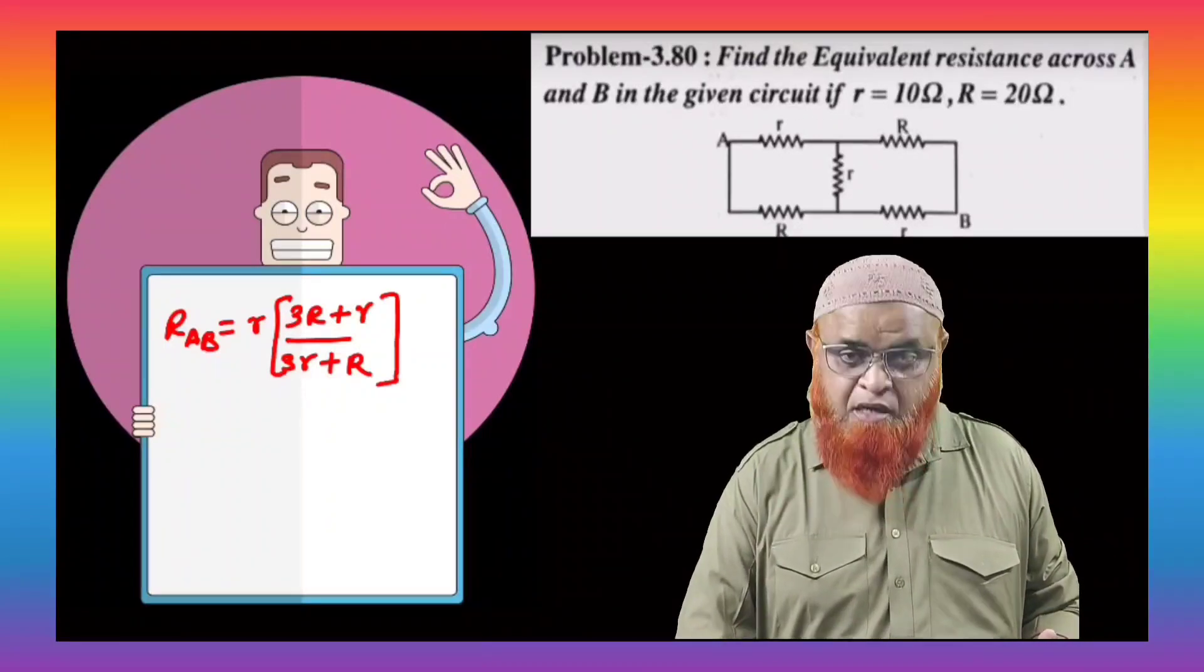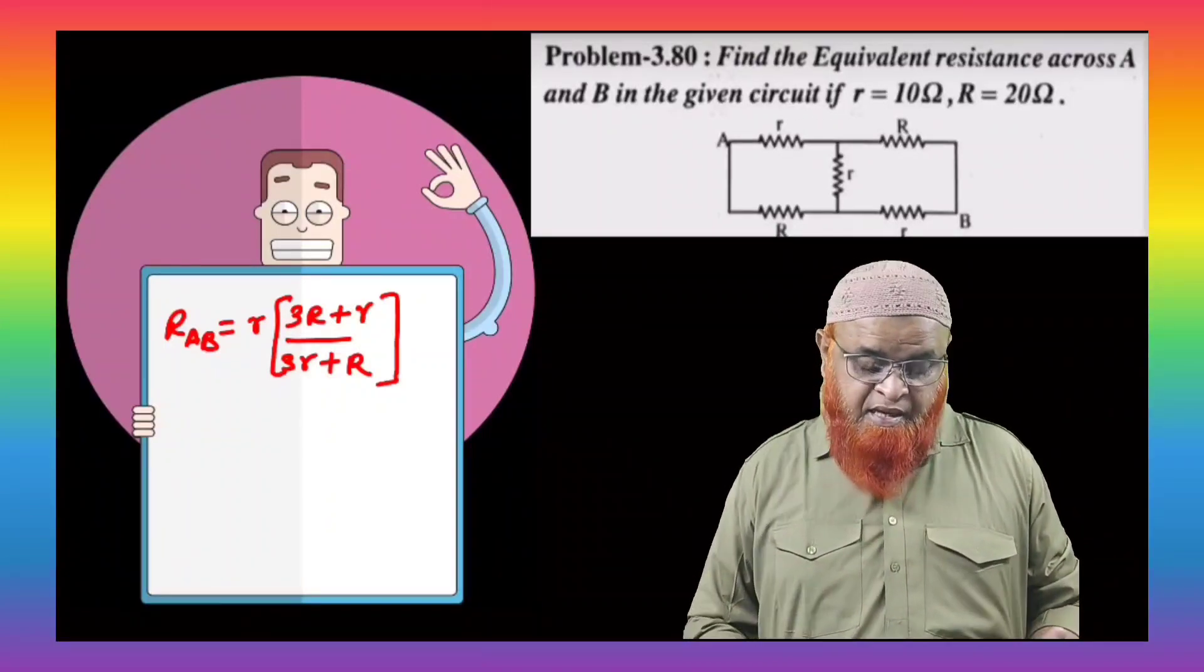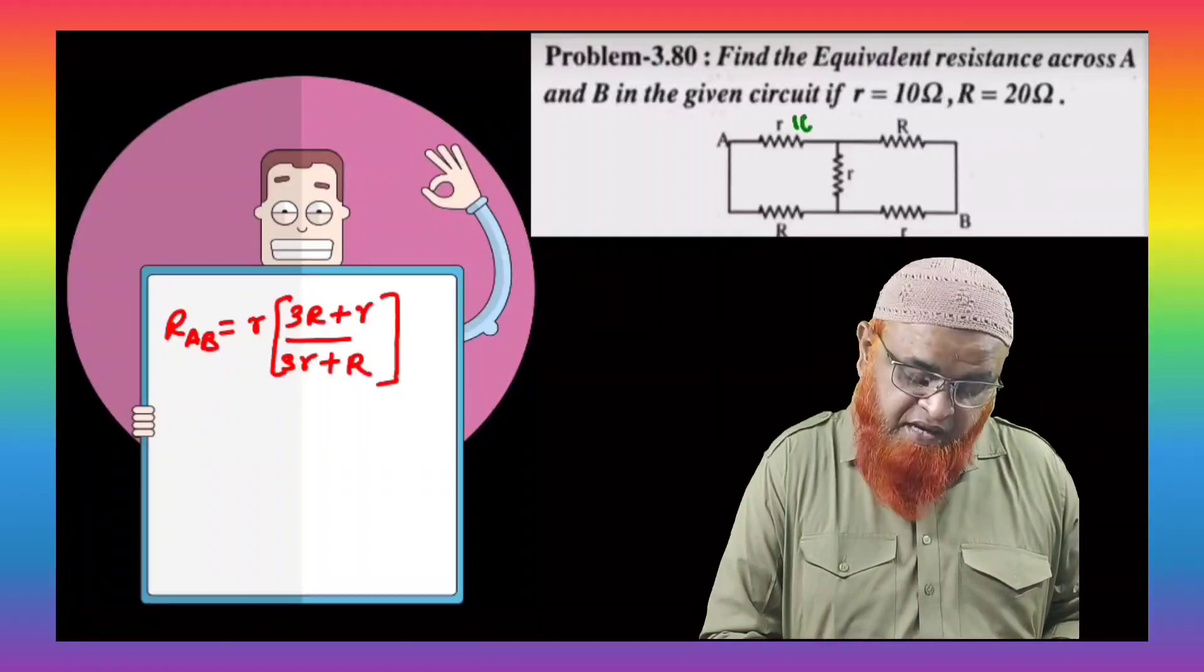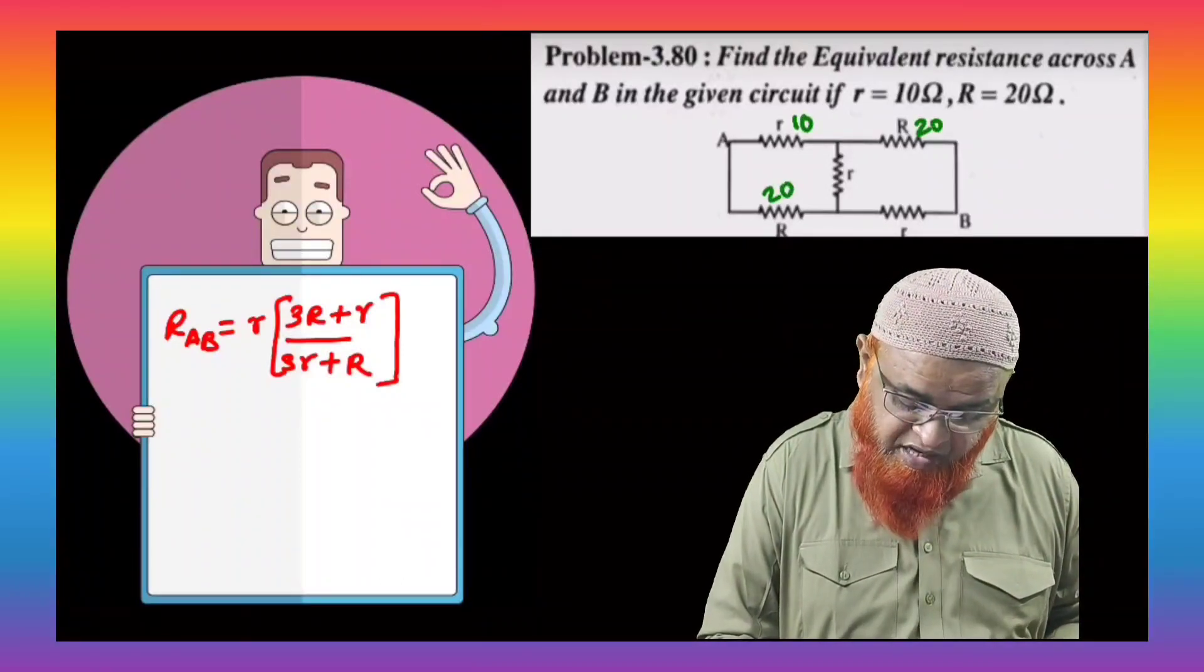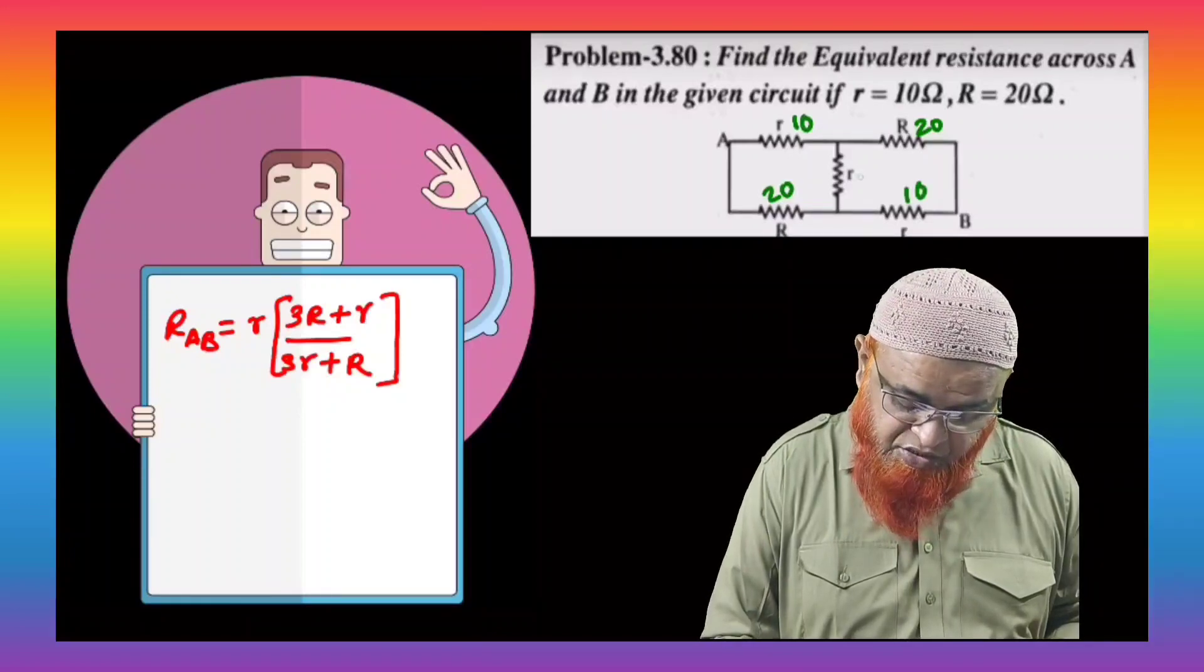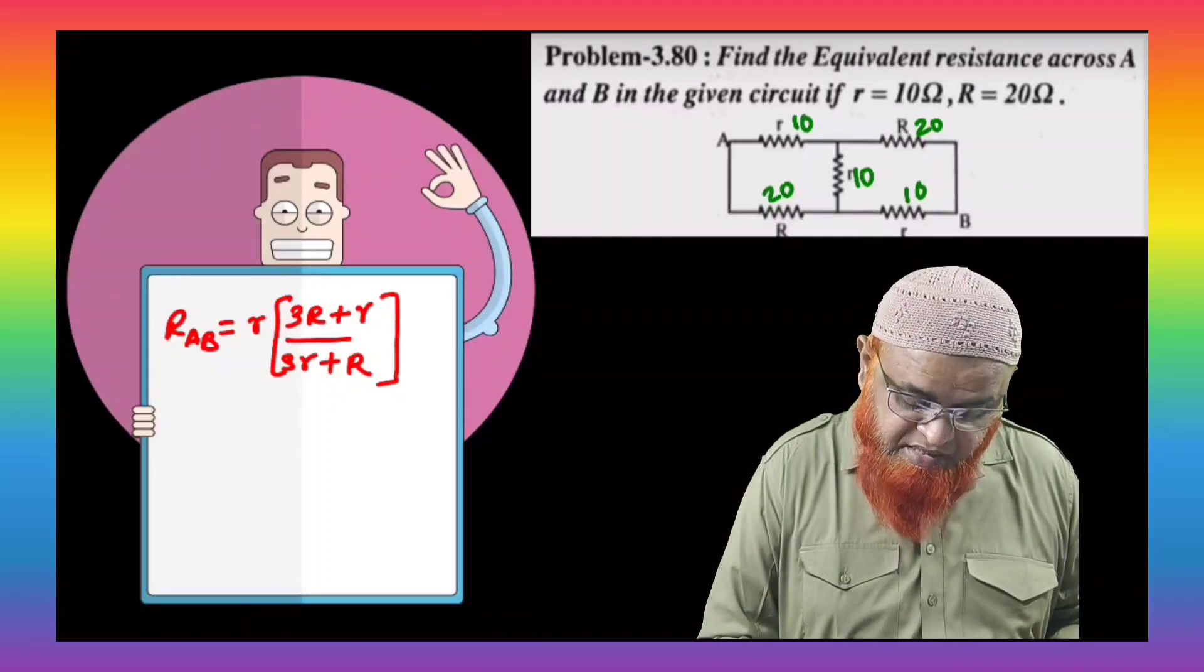Because here, there are two resistors on either sides. You can take small r here, it is given as 10. And capital R is given as 20. And again, this is 20 and this is going to be 10. And in the middle, it is taken as 10 here.